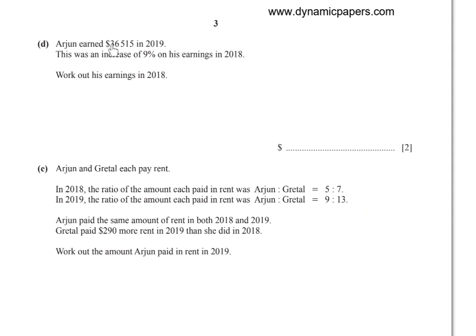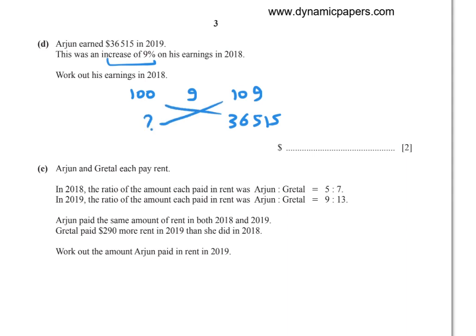Part (d): Arjun earned $36,515 in 2019. This was an increase of 9% on his earnings in 2018. Work out his earnings in 2018. An increase of 9% means it was 100, increased by 9, now 109. After the increase it is 36,515, so before the increase: 36,515 times 100 divided by 109 equals $33,500.